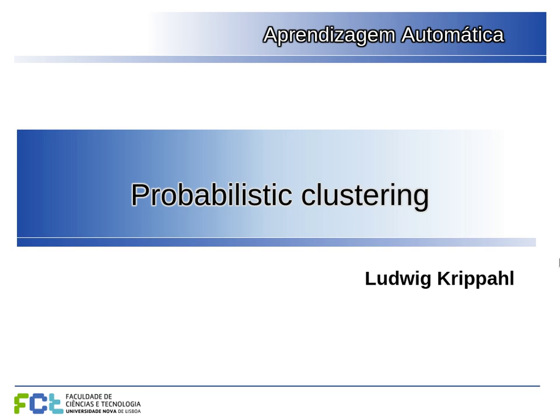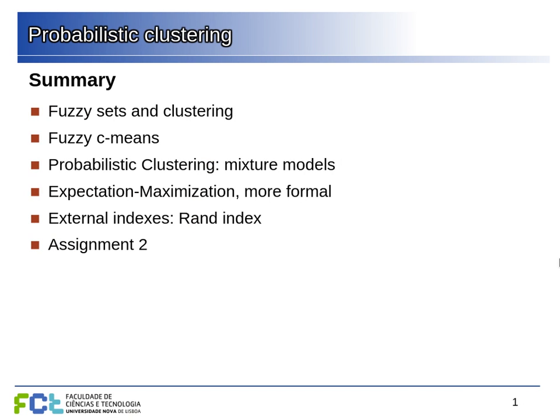We're going to see fuzzy and probabilistic clustering — examples of clustering where we don't have a crisp assignment of each element to a cluster, but examples can belong more or less to each cluster or to different clusters. We'll see the idea of fuzzy sets, fuzzy clustering, the fuzzy C-means algorithm, and then the Gaussian mixture model for probabilistic clustering.